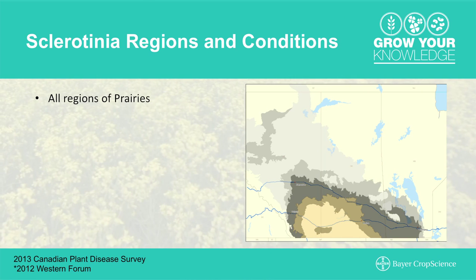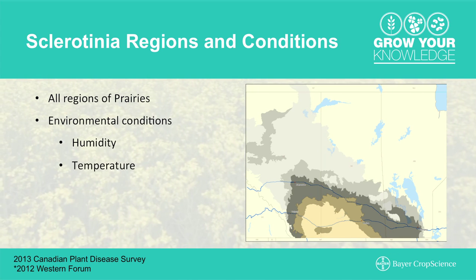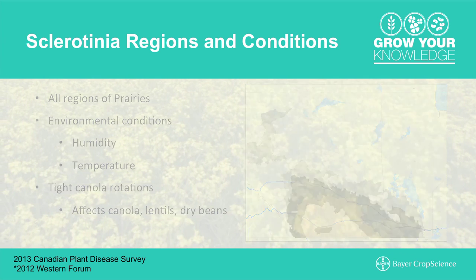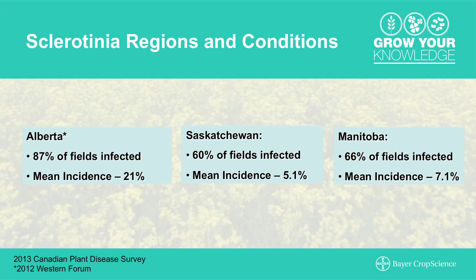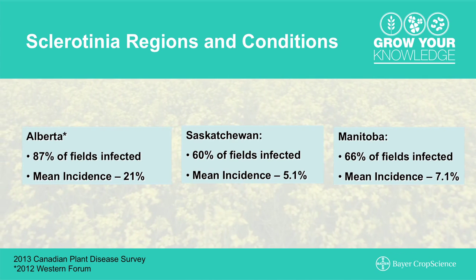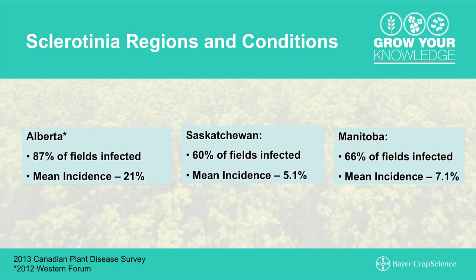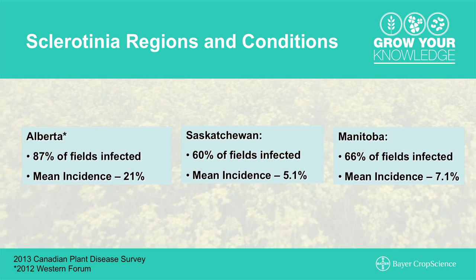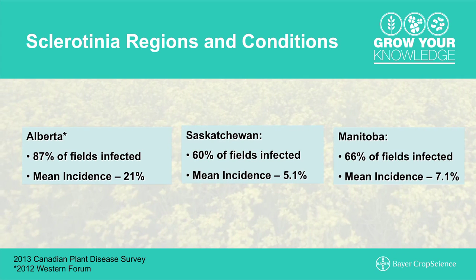Looking at the status of sclerotinia in western Canada right now, it's found in all growing regions of the prairies. It's largely driven by environmental conditions — moisture and warmer conditions generally lead to more infection. It continues to spread, and in recent plant surveys across the west, we've seen anywhere from 60% up to 87% infection levels in fields. The trends show a two-year cycle, influenced by weather cycles and crop rotation practices.